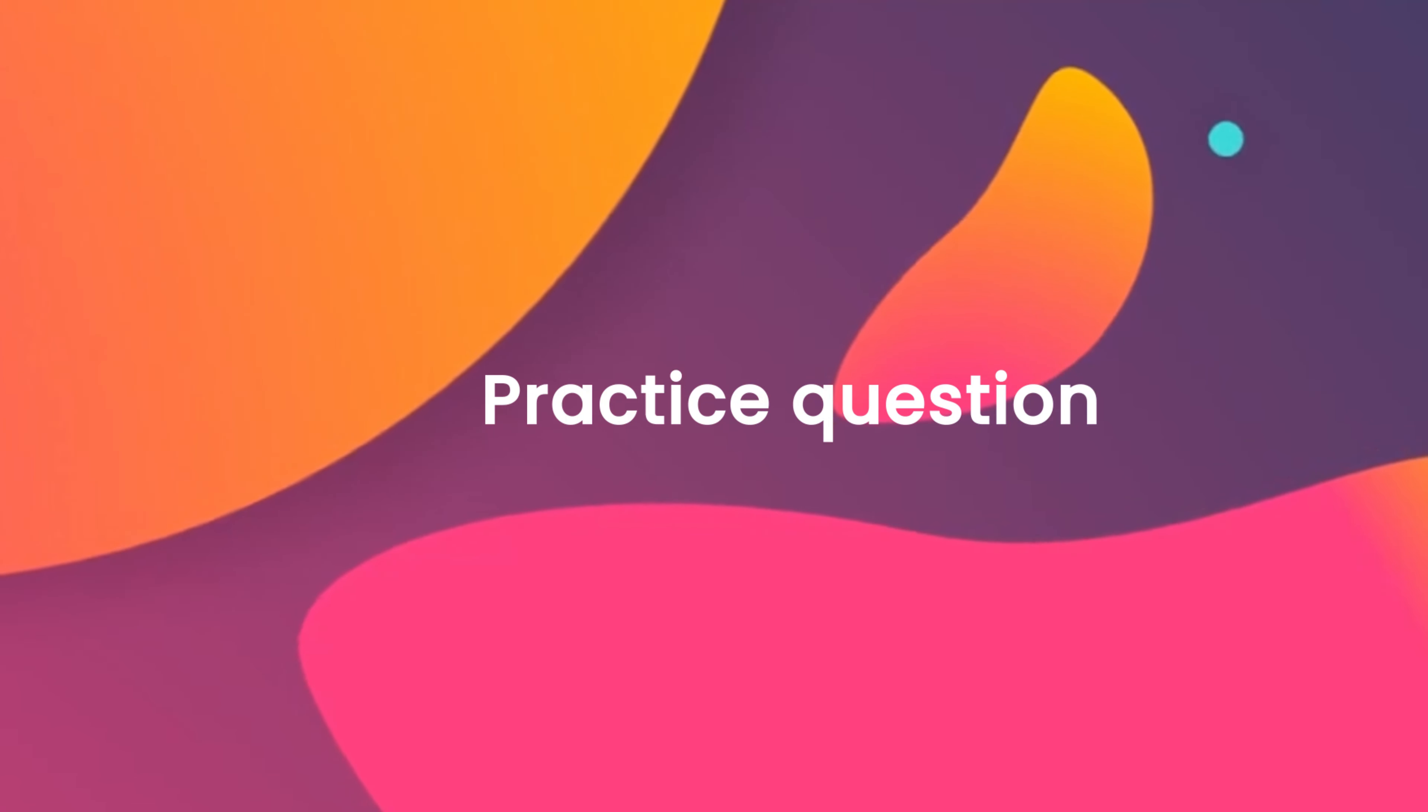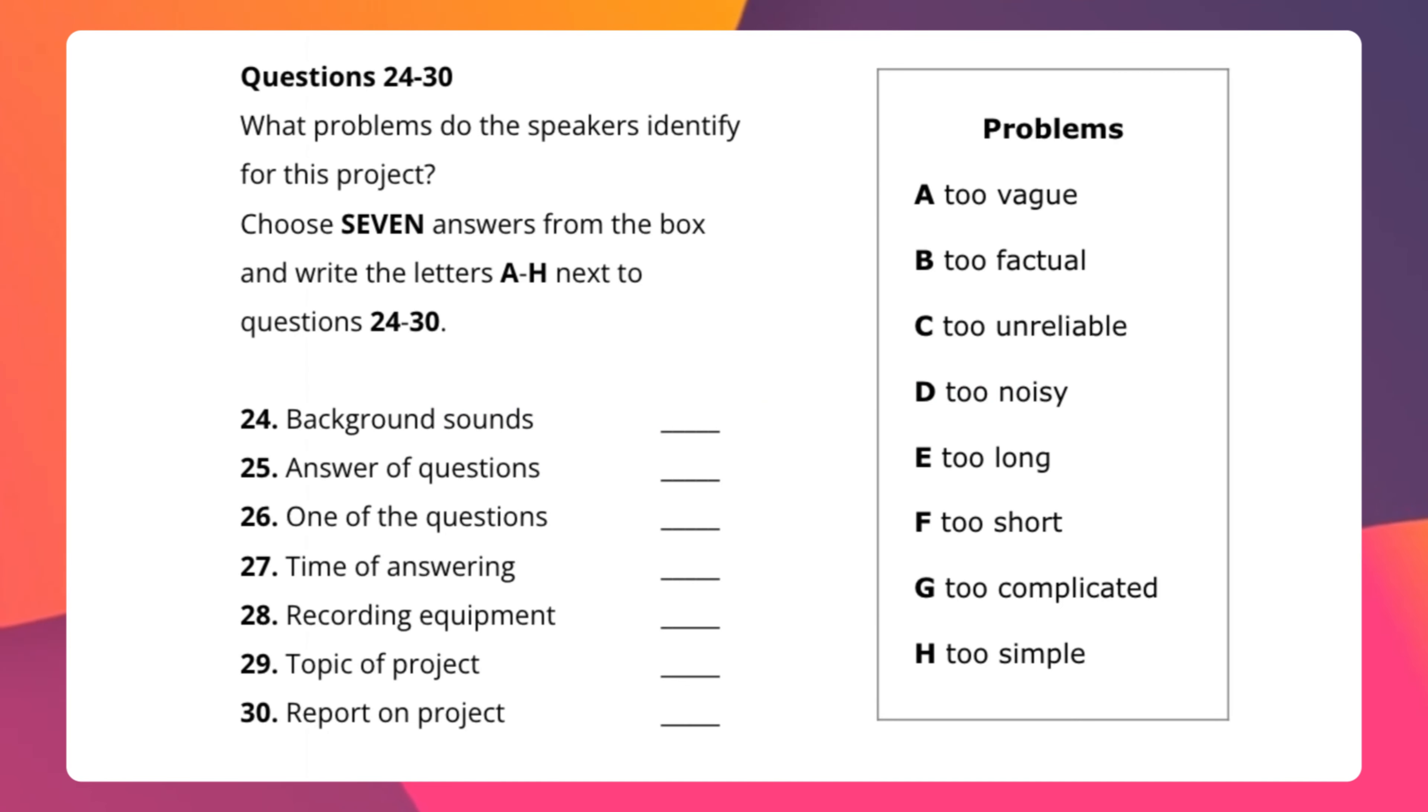Practice question task. So here we have the questions 24 to 30 and the question is what problems do the speakers identify for this project. So they may talk about background sounds and that would be the first item that would be discussed. The next one is answer of questions and the next would be one of the questions. Next, time of answering, 28 recording equipment, and then topic of project, and the last one is report on project. You need to find the correct answer from the problems given on the right hand side.